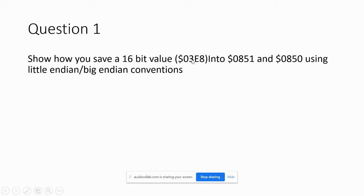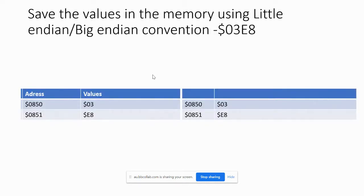Show how you save a 16-bit value 0x03E8 into addresses 0x0851 and 0x0850 using little endian and big endian conventions. I haven't shown you which is which yet because I want you to pause and try to guess from the previous lecture slides. Go ahead and attempt it.